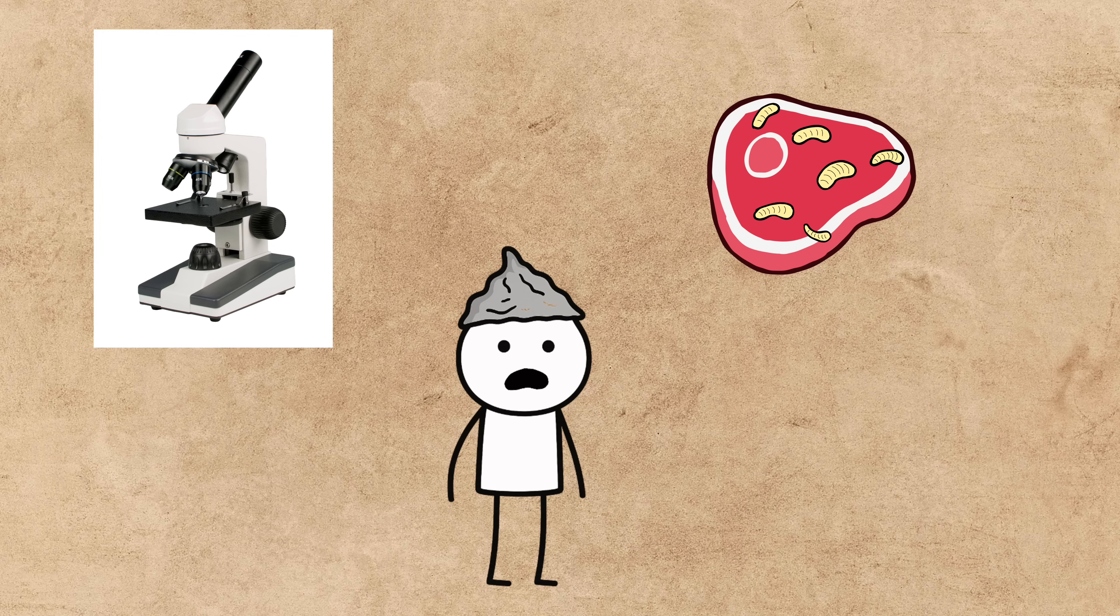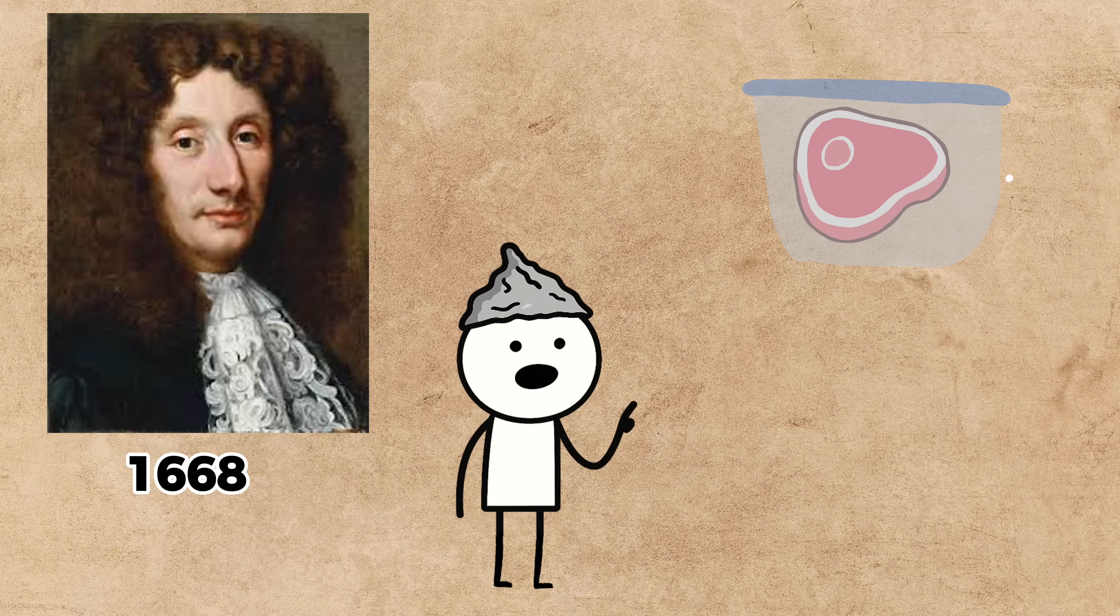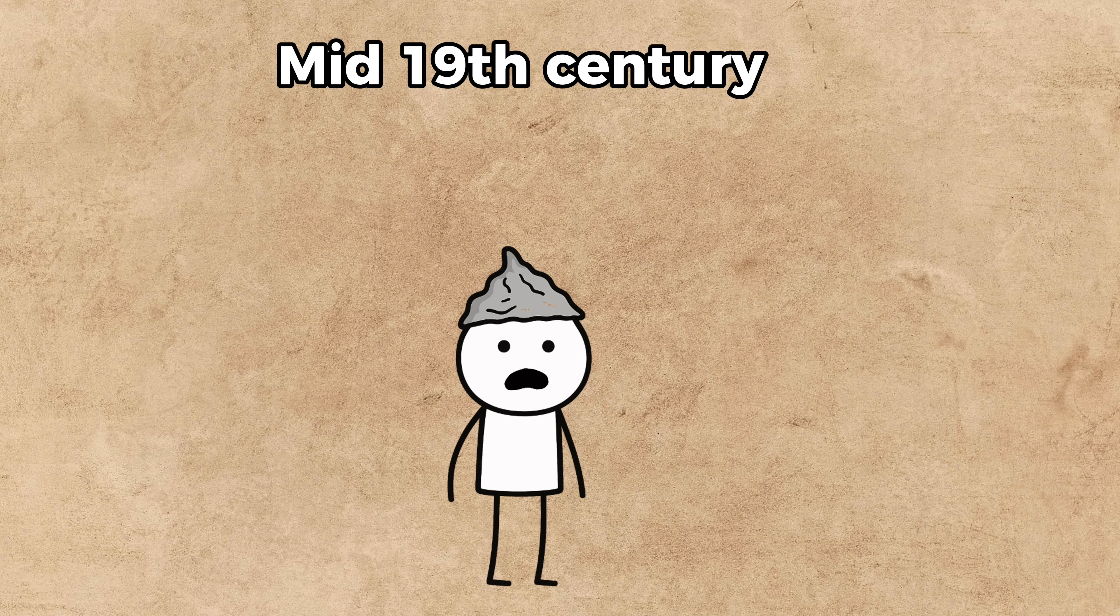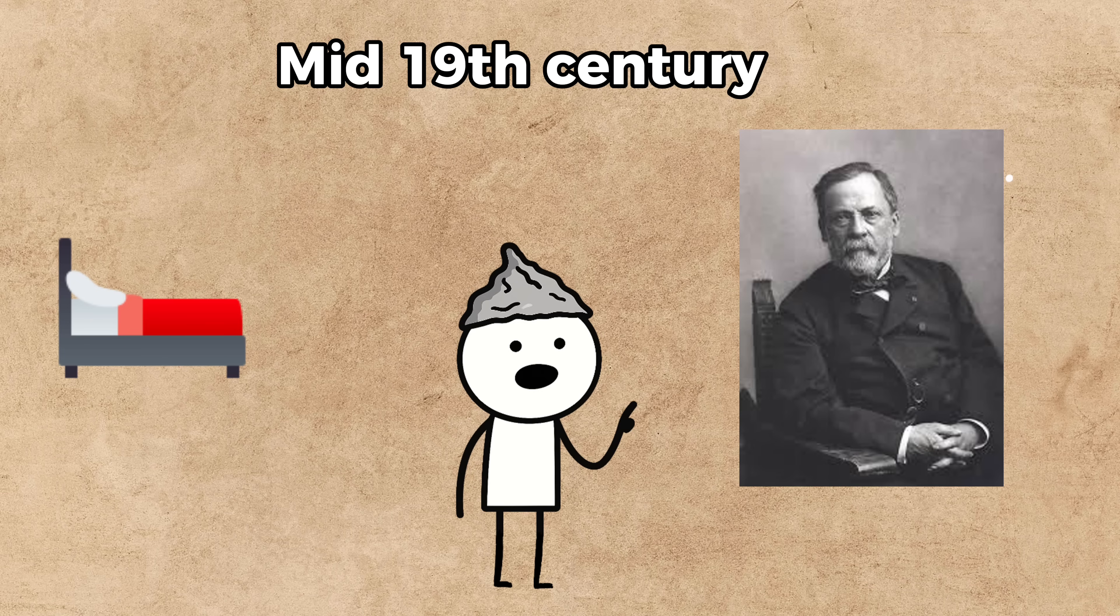This idea was so powerful it stuck around for centuries, even after scientists like Francesco Redi showed in 1668 that if you covered meat to keep flies away, no maggots would appear. It wasn't until the mid-19th century that the theory was finally put to bed for good, most famously by Louis Pasteur.